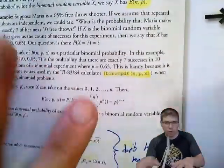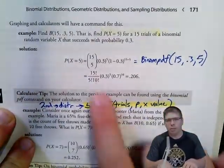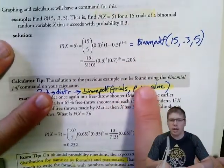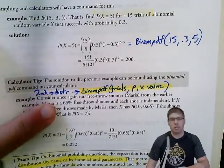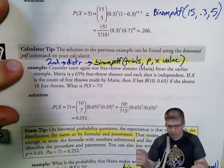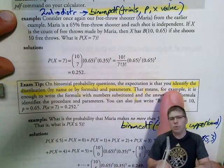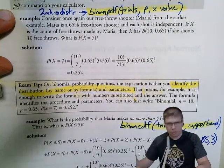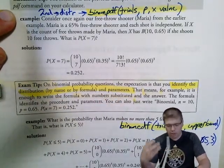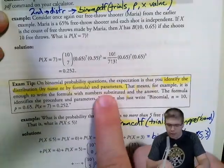On free response, you can show the formula, describe it in words as a binomial distribution, or use the binomPDF command. If you use the calculator command, label your inputs: number of trials, probability of success, and x value (the number of successes). You must identify the distribution by name or formula and define the parameters n and p. Writing out that binomPDF statement counts as defining it and the parameters.